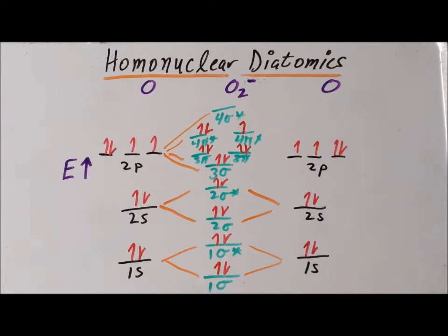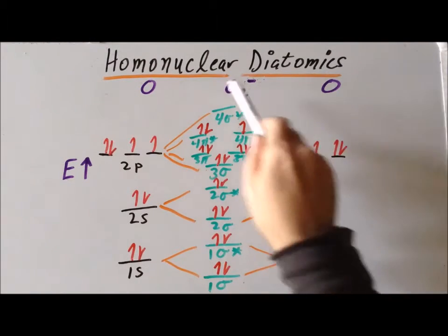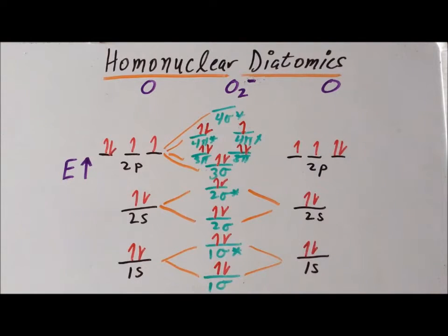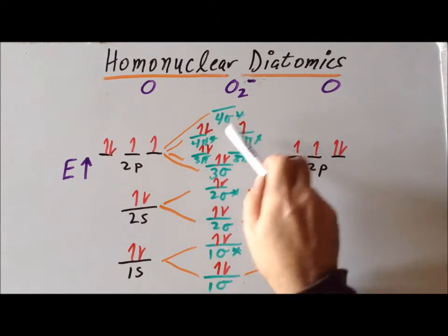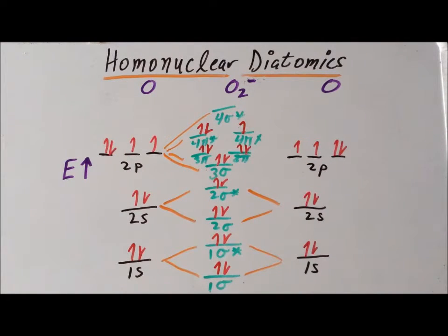So, we can think of two reasons why superoxide is particularly reactive. On one hand, it has one unpaired electron, so it is a free radical. And also, the oxygen-oxygen bond strength has been reduced from what it was in ordinary dioxygen.